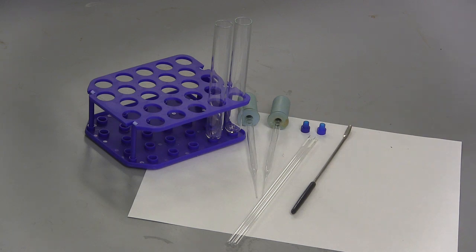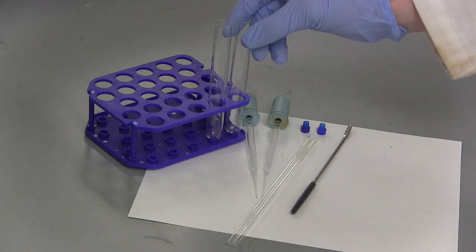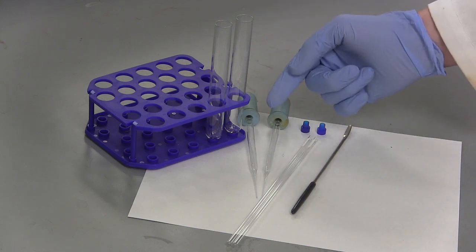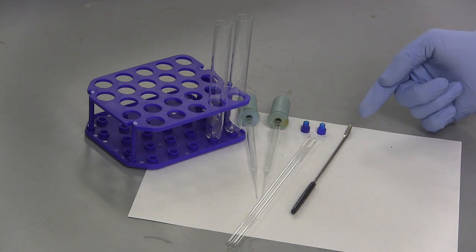In preparing the sample, start by having a test tube, a test tube rack, an NMR tube and cap, a pasture pipette, a scoopula, and your sample.